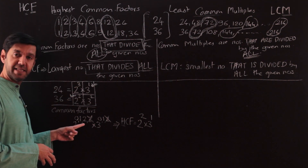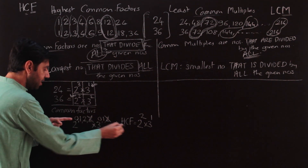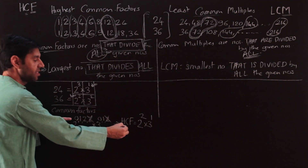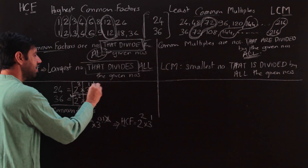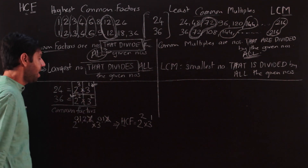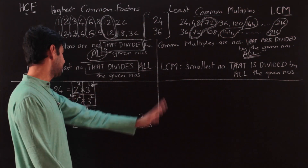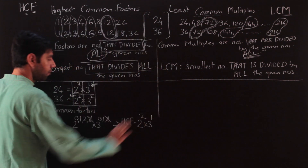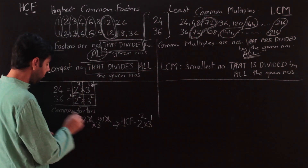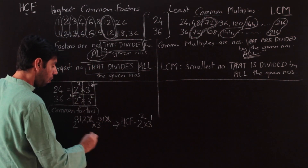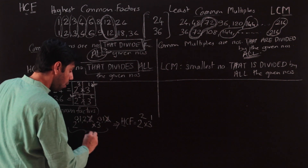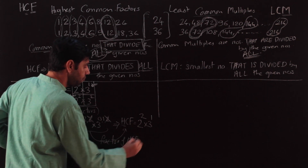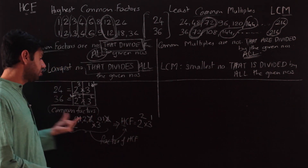So I take the minimum power for each prime first, and among those minimums I pick the highest — that is where the 'highest' in HCF applies. Also, remember: all common factors are themselves factors of the HCF. This is useful when a question asks for something like the smallest three-digit common factor — it will be a factor of the HCF.